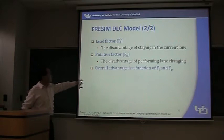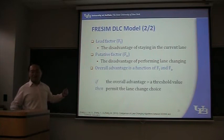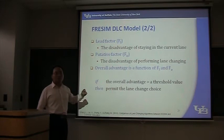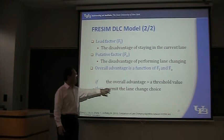So you've got two factors, and you will calculate an overall advantage. An overall advantage is a function of both the lead factor and the putative factor. Then after calculating this overall advantage, it will be compared with a threshold. If this advantage is bigger than the threshold, then the lane change choice will be committed.